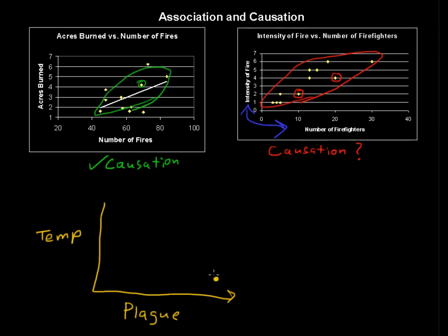That is, back in the day when we had more plague, the temperatures were lower. But now we have less plague in the world, but the temperatures are higher.